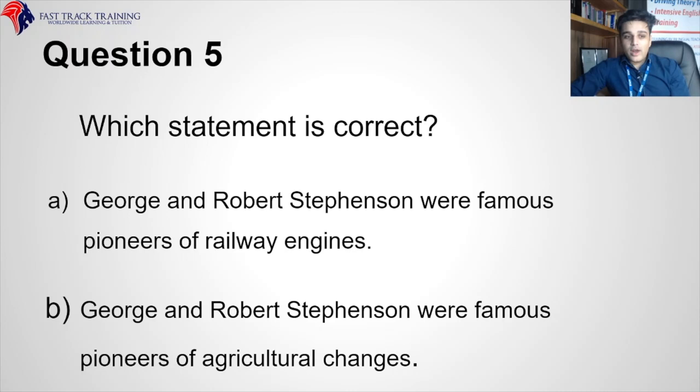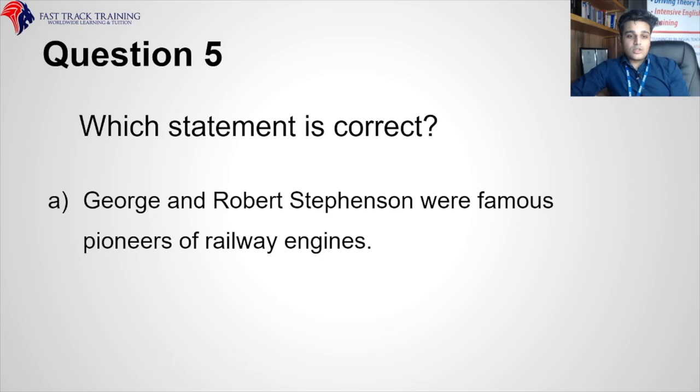Which statement is correct — George and Robert Stevenson were famous pioneers of railway engines, or agricultural changes? Remember: agriculture means farming; railway means railways. These two brothers made the first ever train.